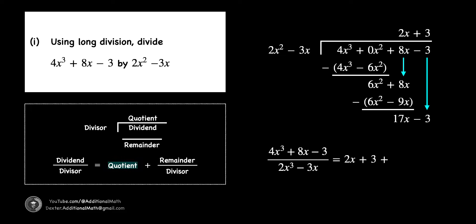Our answer can therefore be expressed as 2x plus 3, which is the quotient, plus 17x minus 3, which is the remainder, divided by 2x squared minus away 3x, which is the divisor of the long division. And that will be the answer to part 1 of this question.